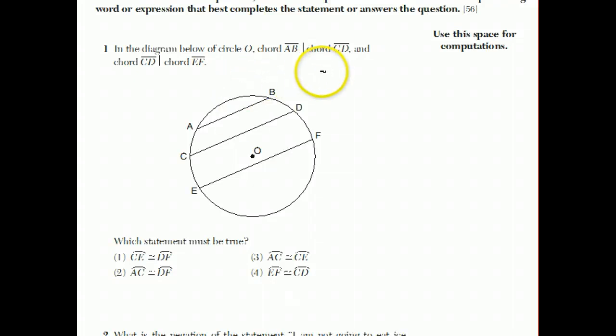Question one, in the diagram below, circle O, there's a chord. A chord is a line segment that connects two points on a circle. It's parallel to chord CD, and that's parallel to chord EF, so you have parallel chords here. And they want to know which statement has to be true. Well, there is a rule, theorem from geometry, that if you have two chords that are parallel,